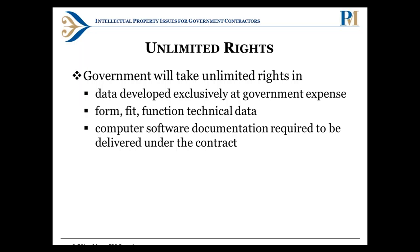If something is developed purely at government expense, the government can take unlimited rights. Form fit and function data is essentially the information needed to maintain a delivered item — for example, if you put together a server array for them, the manuals and documentation on how it all works constitute form fit and function data. Even if the government has restricted rights in the software and limited rights in the technical data used to build that server array, the information needed to maintain it is not restricted, because they need to be able to give it to a maintenance contractor. Your core IP in the item itself is still protected.